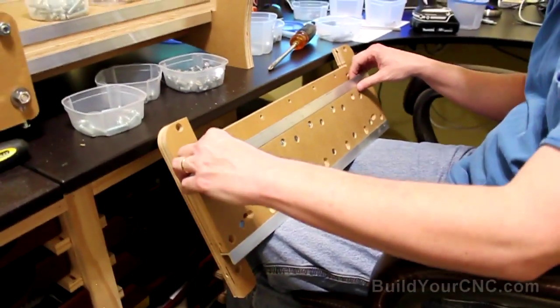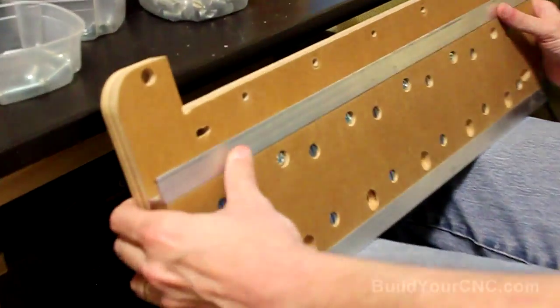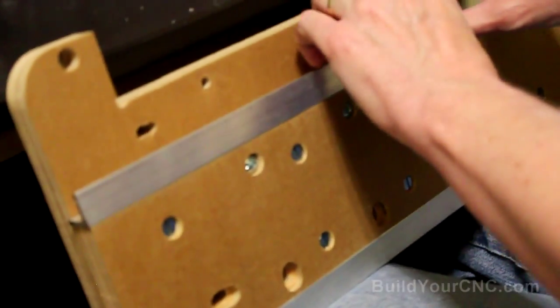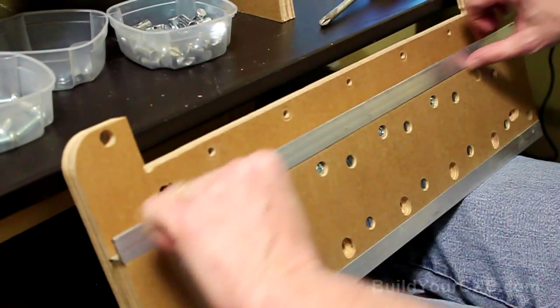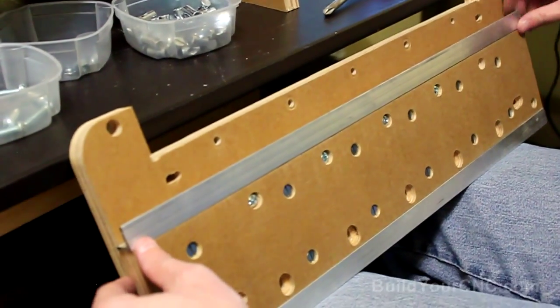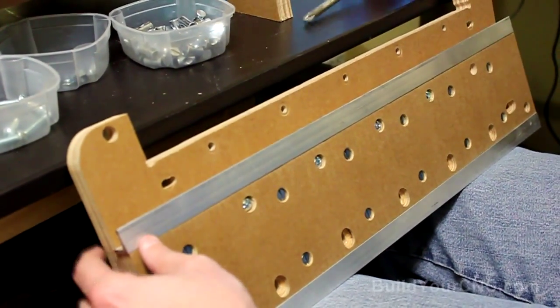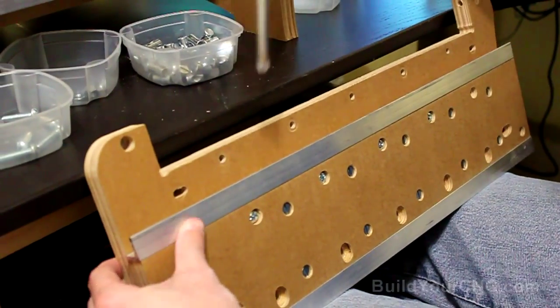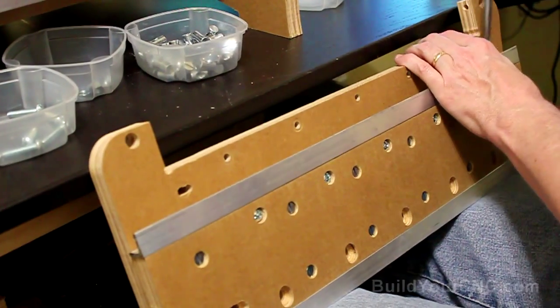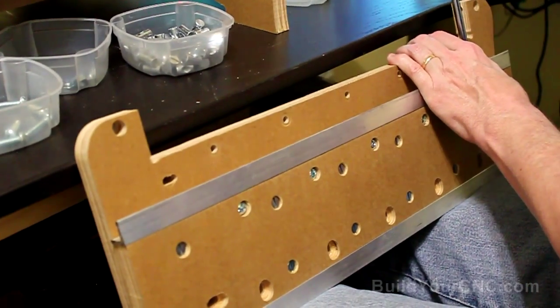Now we're ready to align the rails, and what I'm going to do is just feel the edge of here to make sure that it's got about the same amount of distance from the face. And I'm going to tighten down one end first, and that's the same. Feel this one, this is the same.